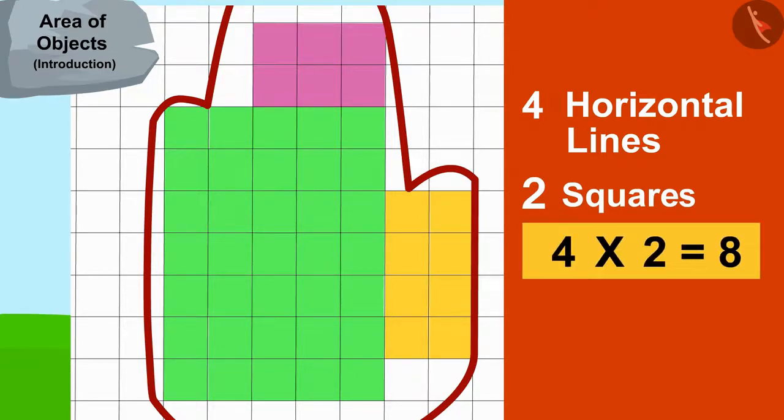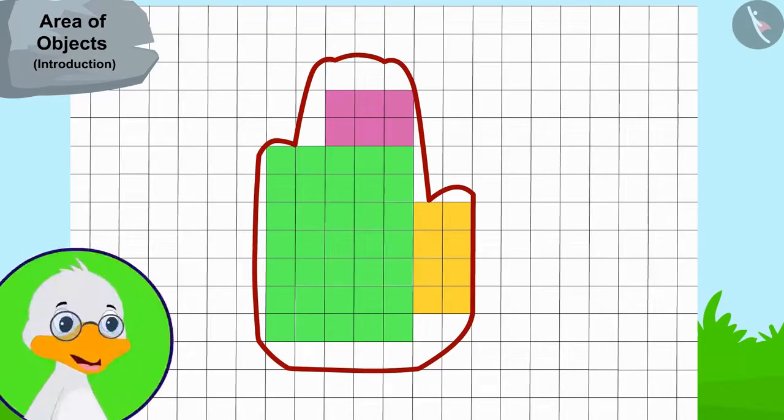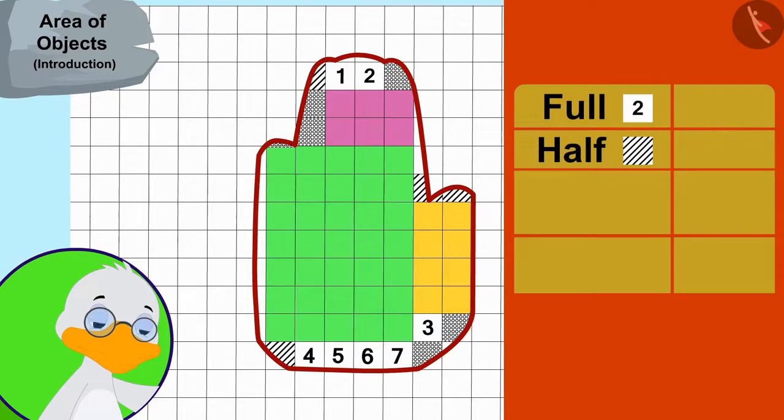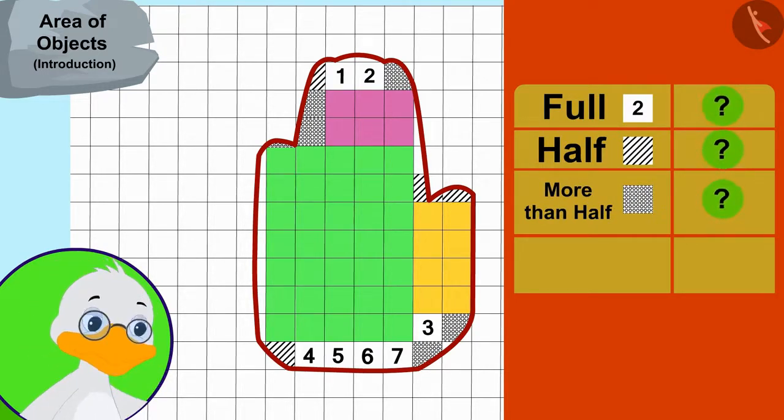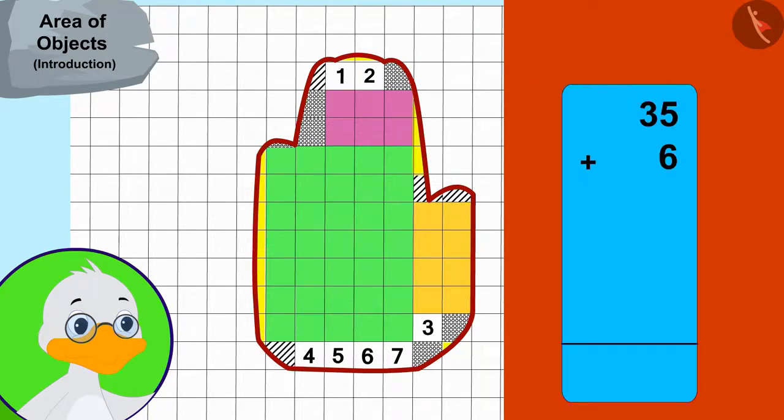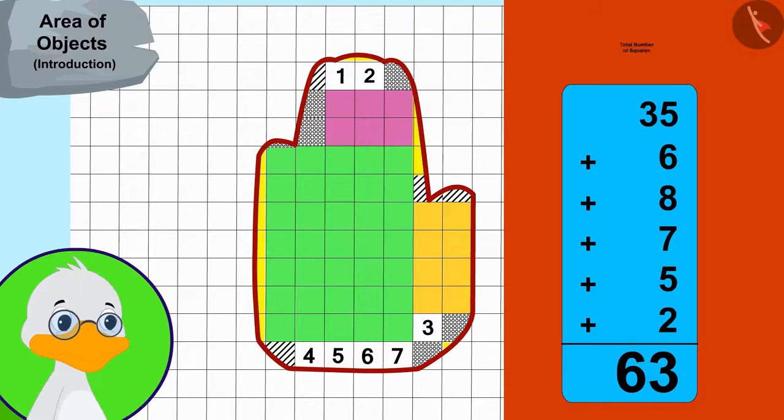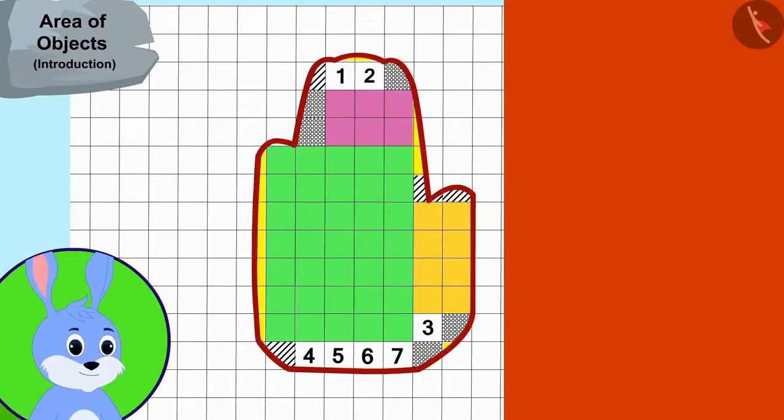Now in the end, I will count the number of remaining full, half, and more than half squares, thought uncle. Uncle also found these numbers in this way. Now uncle added all these numbers to find the total number of squares. In this way, there are a total of 63 squares in bunny's hand impression.